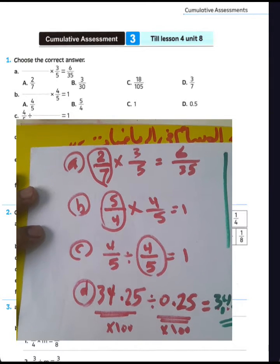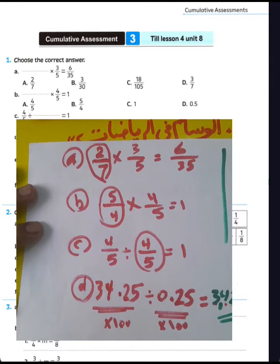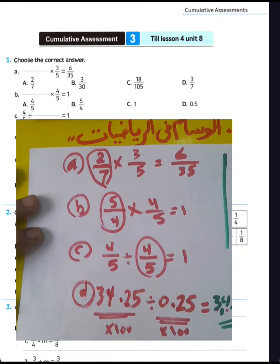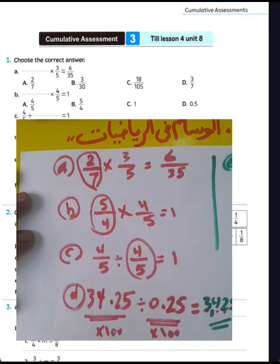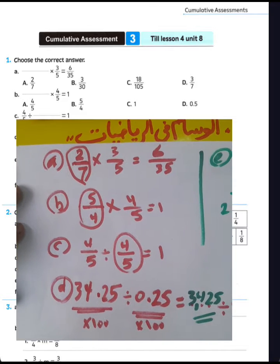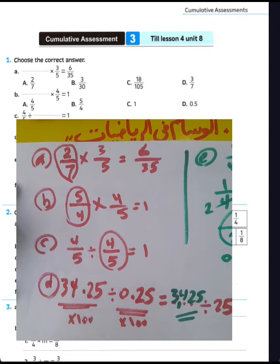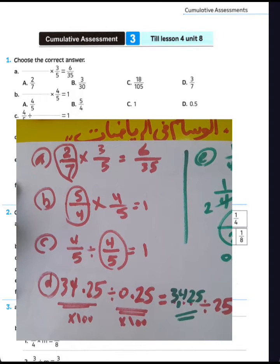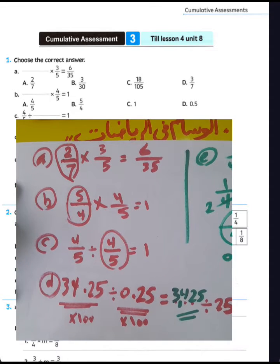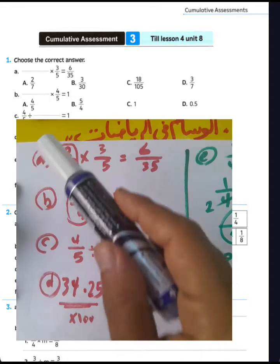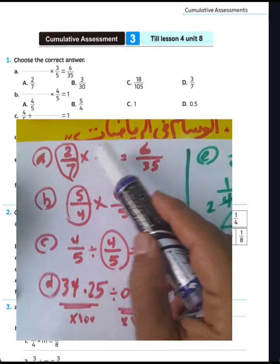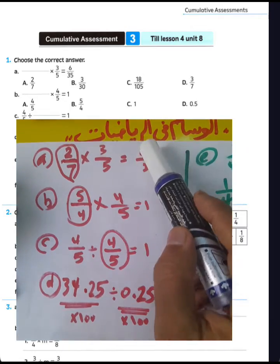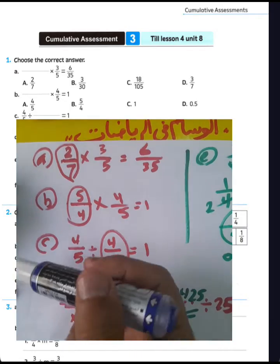Today we'll solve commutative assessment number 3 from the Asr book. Look at question number 1 — choose the correct answer. Letter A: 2 over 7 multiplied by 3 over 5 equals 6 over 35.